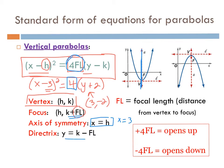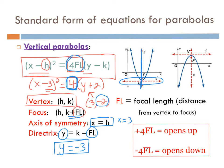The directrix line for a vertical parabola is horizontal — always perpendicular to the axis of symmetry — written as y equals. Subtract the focal length from the vertex's y-value to get the directrix. In the example above, the focal length is 1 (dividing 4 by 4), and since the y-coordinate is −2, subtracting 1 gives −3, so the directrix is y = −3. Remember: the focal length is the distance from the vertex to the focus and also from the vertex to the directrix.